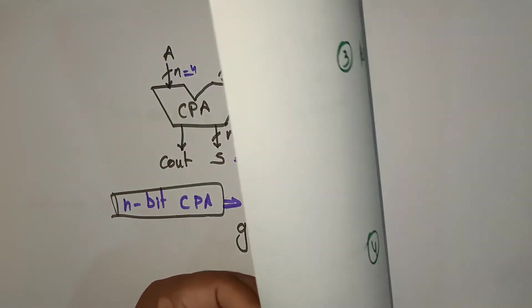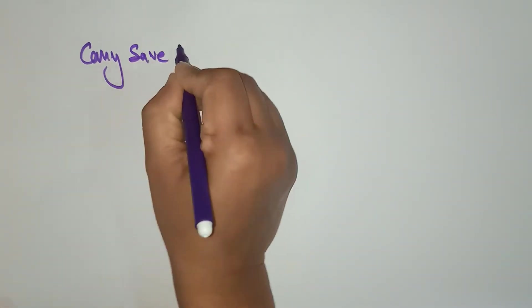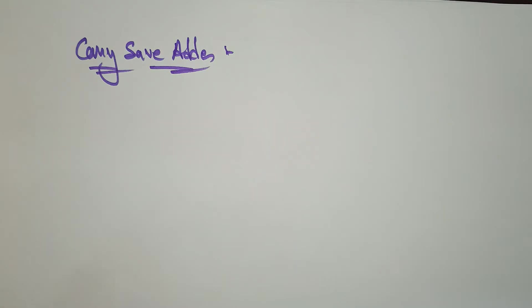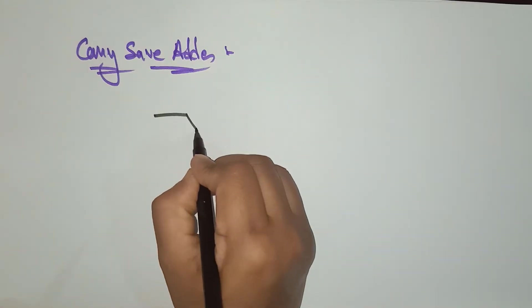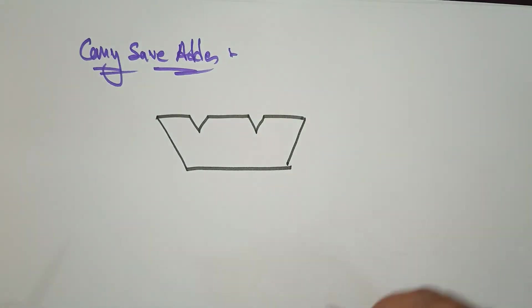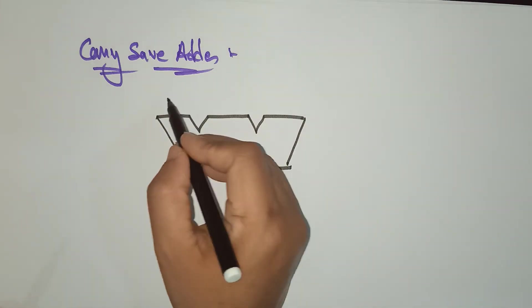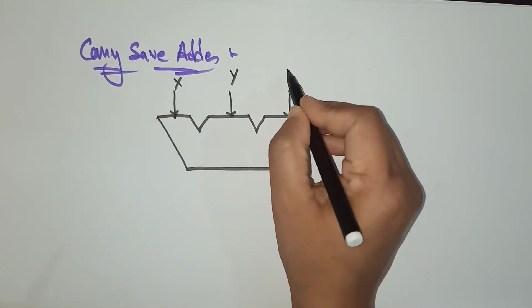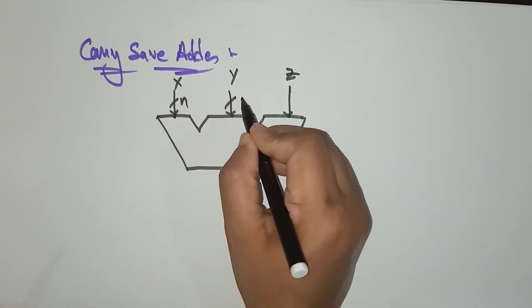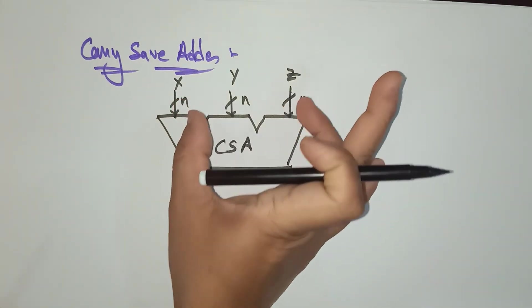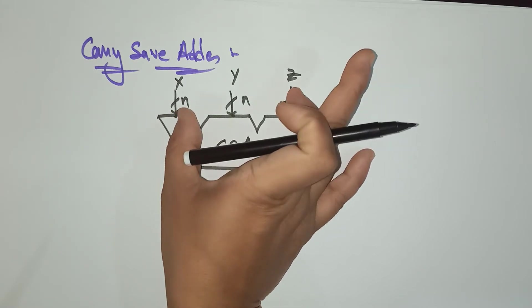Now let's look at the CSA — the carry save adder. The carry save adder, unlike the carry propagation adder which only takes 2 inputs, takes 3 inputs: X, Y, and Z. X, Y, and Z can each take N bits.